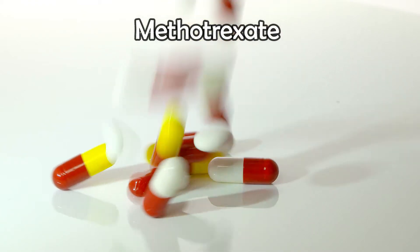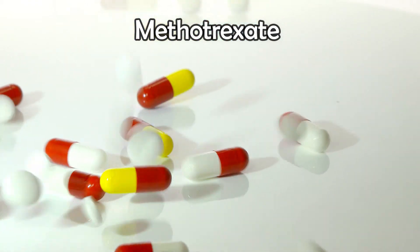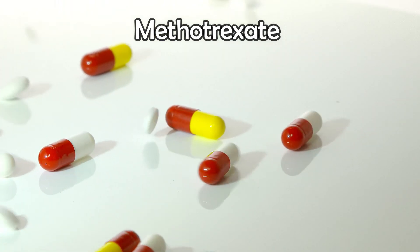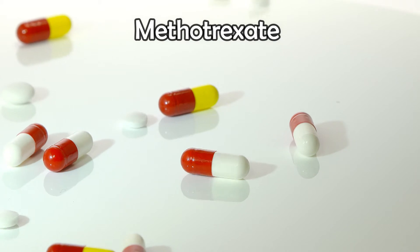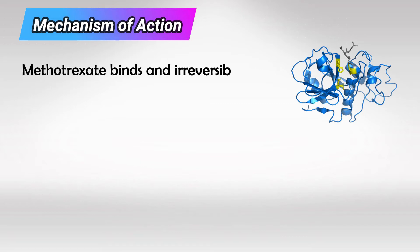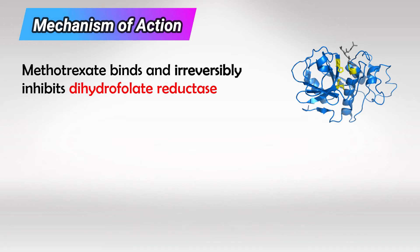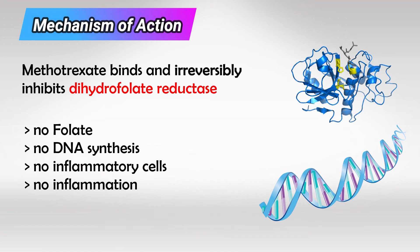Welcome back. In this video we'll talk about the most commonly used drug in the treatment of rheumatoid arthritis: methotrexate. It's a folate synthesis inhibitor — basically a modified folic acid — and once it binds to the dihydrofolate reductase enzyme, it irreversibly inhibits it. This disrupts DNA synthesis and inhibits inflammation.